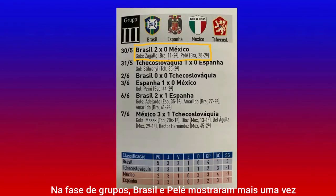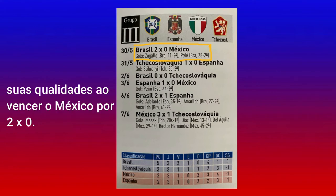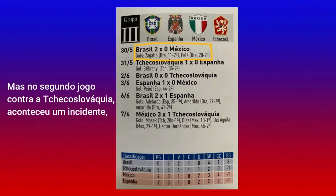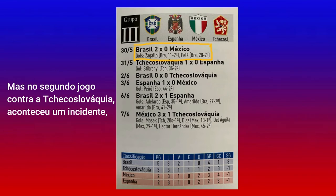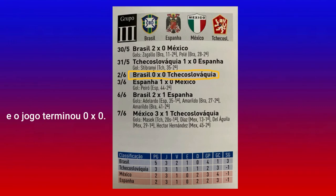In the group stage, Brazil and Pelé showed once again their power by beating Mexico 2-0. But in the second game against Czechoslovakia, an incident happened. Pelé received a heavy injury on his left groin that would cut him out of the World Cup, and the game ended in a 0-0 draw.